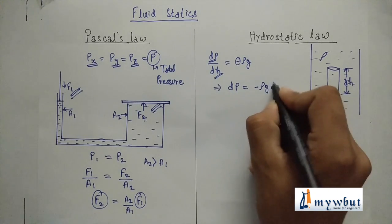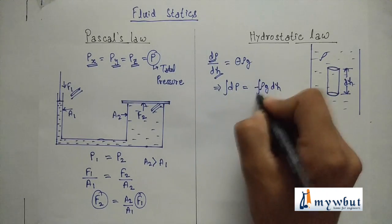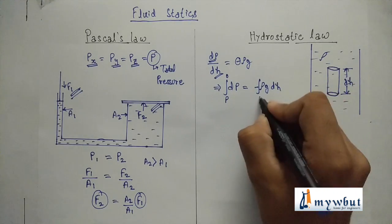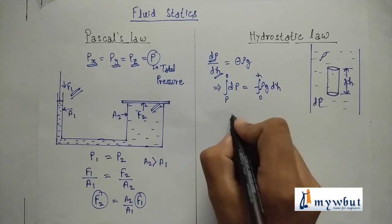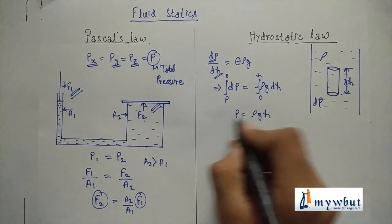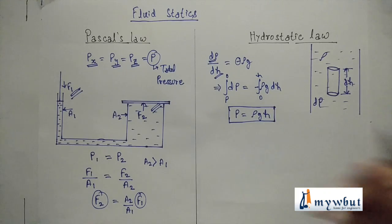Now integrating both sides from p to 0 and 0 to h, we get p equals to rho g h. This is the static pressure of fluid at any point.